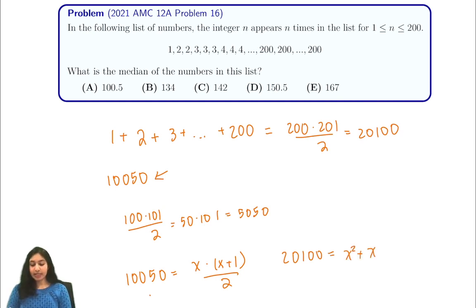So in this case, I would just try and guess squares that are close to this number and then check them. If you remember that 140 squared is going to be around 19,600, which is pretty close to 20,100.